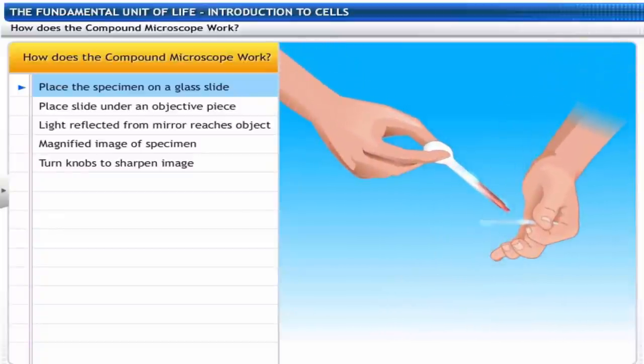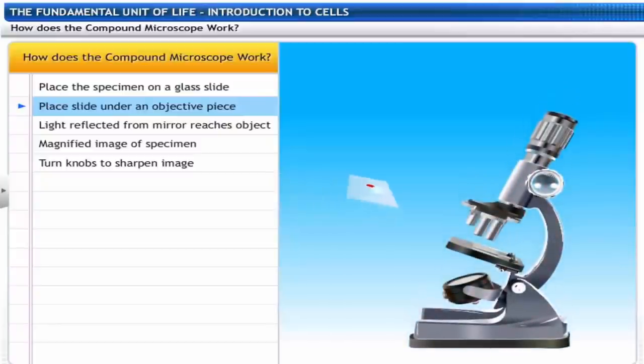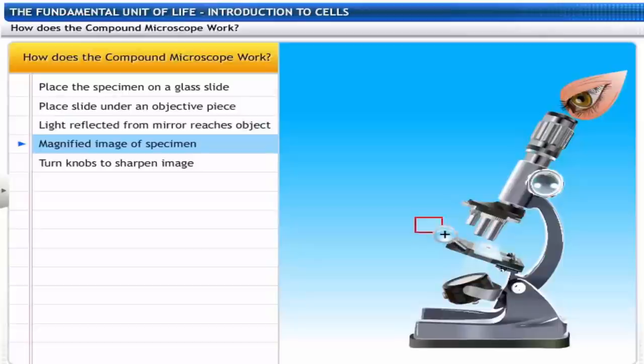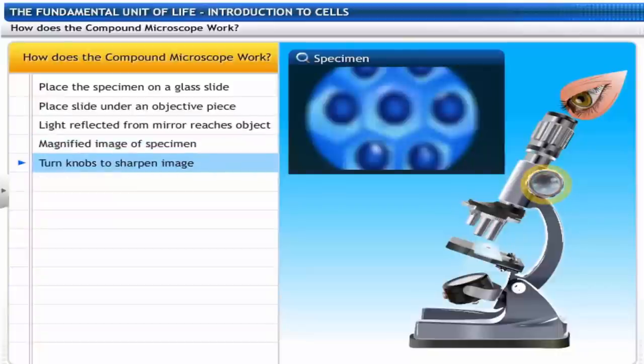The specimen to be observed is placed on a glass slide. The slide is then placed on the stage under an objective piece in the middle of the microscope. The light reflected from the mirror passes on to the object. From the eyepiece, a magnified image of the specimen can be seen. The side knobs are turned to get a sharper image.